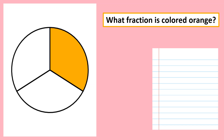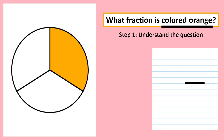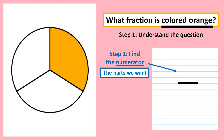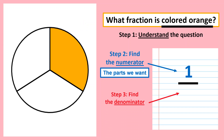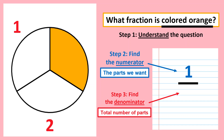Let's have a look at the second example. What fraction of this circle is colored orange? First, understand the question — we want the one colored orange. Find the numerator: how many parts are colored orange? There is only one, so write one as the numerator. Last step, find the denominator — the total number of parts: one, two, and three. So we write three at the bottom.